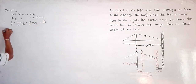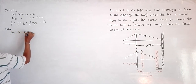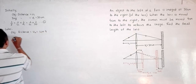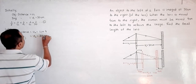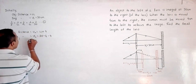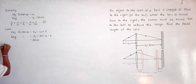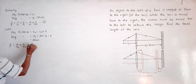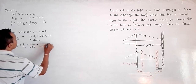For the later case: object distance u2 equals u1 plus 4, and the new image distance v2 equals 30 minus 4 minus 4, which is 22 centimeters. The new equation 2 is: 1/f = 1/u2 + 1/v2 = 1/(u1 + 4) + 1/22.